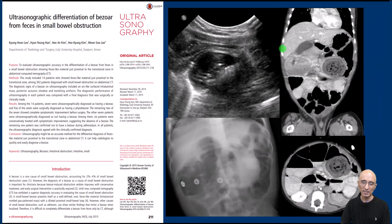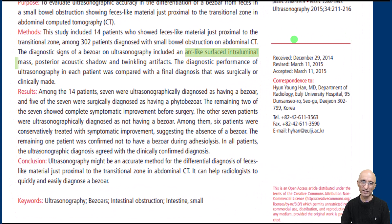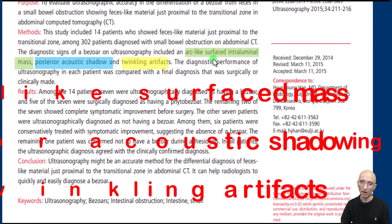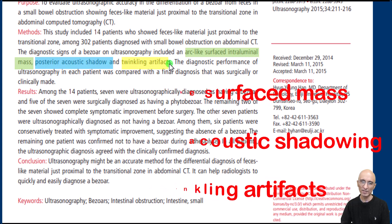An interesting article from the literature attempted to differentiate feces from bezoars. They relied on three important findings: arc-like surfaced intraluminal mass, posterior acoustic shadowing, and twinkling artifacts, which were seen with bezoars but not with feces.